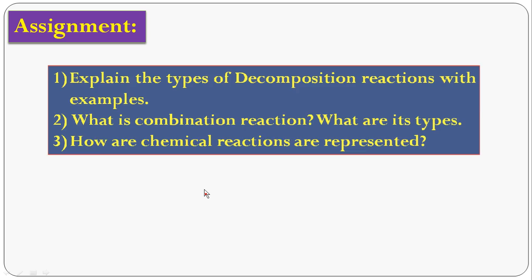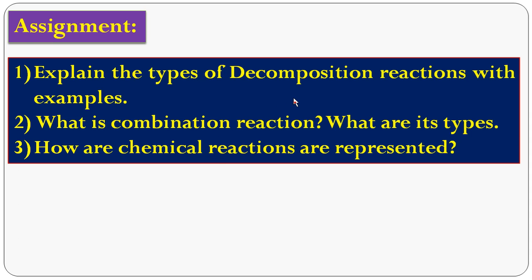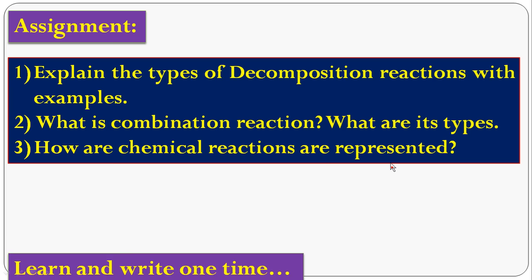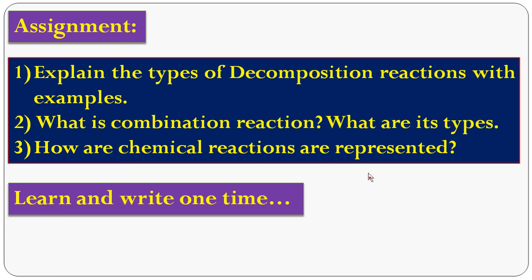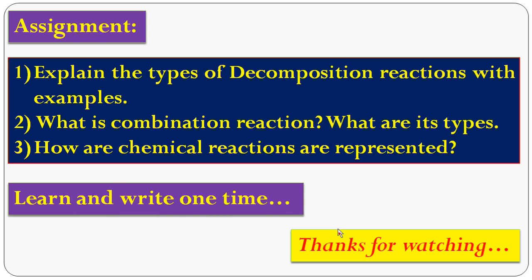Now, come to the assignment. First: explain the types of decomposition reactions with examples. Second: what is a combination reaction and what are its types? Third: how are chemical reactions represented? Students, you have to write and learn these questions. Thank you.